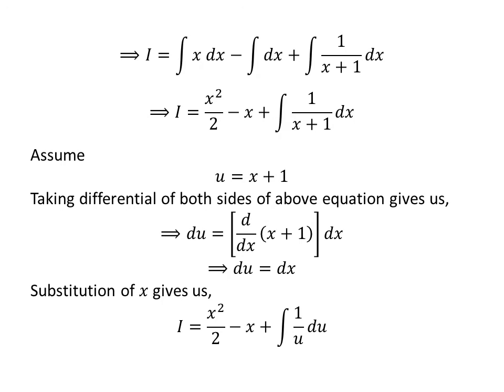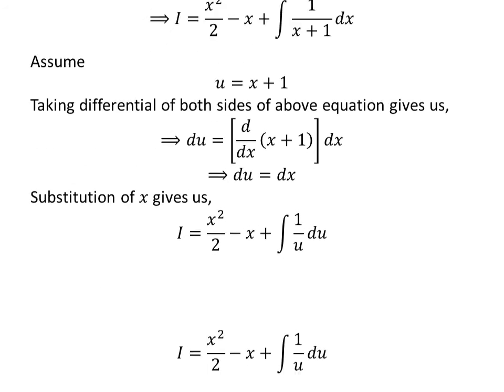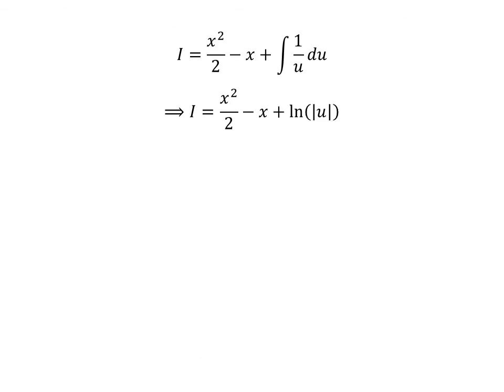Substituting x plus 1 by u and the differential of x by the differential of u in the integral gives us i equal to x squared upon 2 minus x plus the integral of 1 upon u with respect to u. The integral of 1 upon u with respect to u is the natural log of the absolute value of u. To know in detail how to get this integral, please click on the card appearing in the upper right corner. The address of the video is also given in the description. So i is equal to x squared upon 2 minus x plus natural log of the absolute value of u.